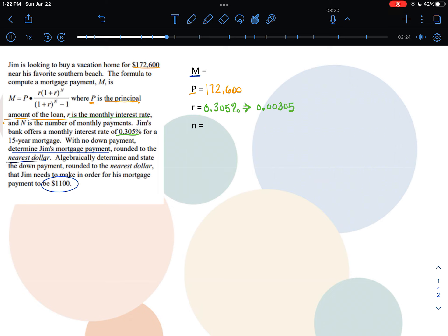Next, I need the number of monthly payments, and the number of monthly payments is going to be every month for 15 years, which means 15 years times 12 months, which means 180 monthly payments.